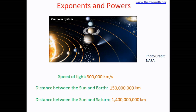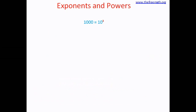Yes, we can, and we have done this before. Where have you written a number in a shorter, smaller format? When you learned about squares and cubes. For example, you could write 1000 as 10 cubed. You can see that the way you write 10 cubed — that little 3 above 10 — is a shorter form to write the big number 1000. This kind of writing is called the exponential form.